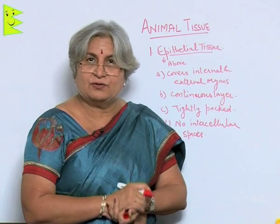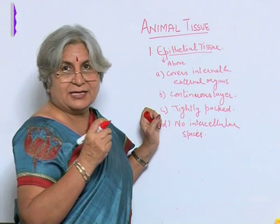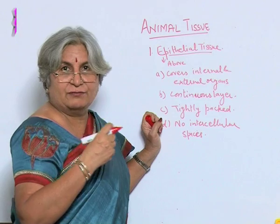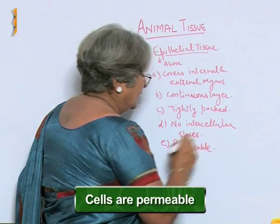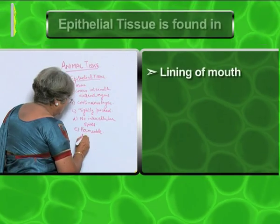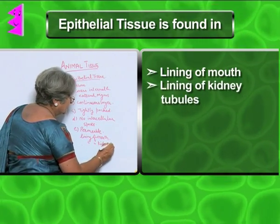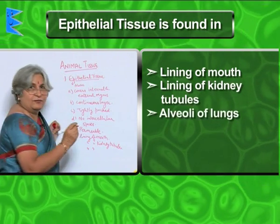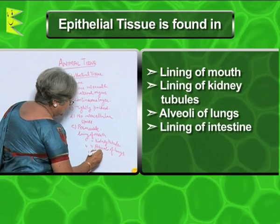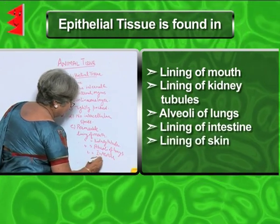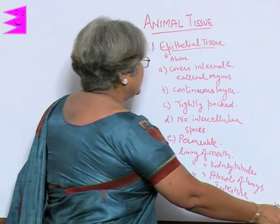For example, sweat oozes out of the skin and the skin also breathes — how will oxygen go in? So there has to be a facility for the movement of material, which means the cells are permeable. Epithelial tissue is found in the lining of the mouth, kidney tubules, alveoli of the lungs, lining of the intestine, and the skin.